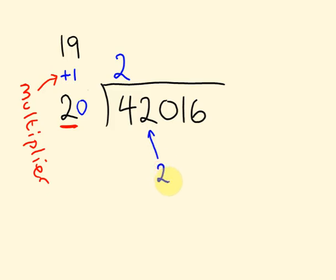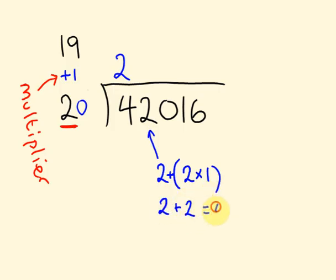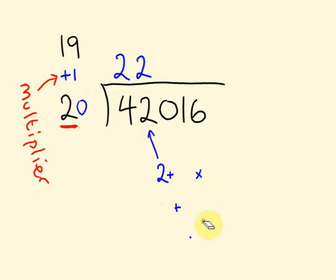Now we've got a 2. As I said, we're going to use part of our answer to get the next part. What we do here is add our previous answer digit to the multiplier times that digit. So it's 2 plus (2 times the multiplier, which is 1) — that's 2 plus 2, which equals 4. We see how many times 2 goes into 4: 4 divided by 2 equals 2. The next part of our answer is 2, with nothing carried over.